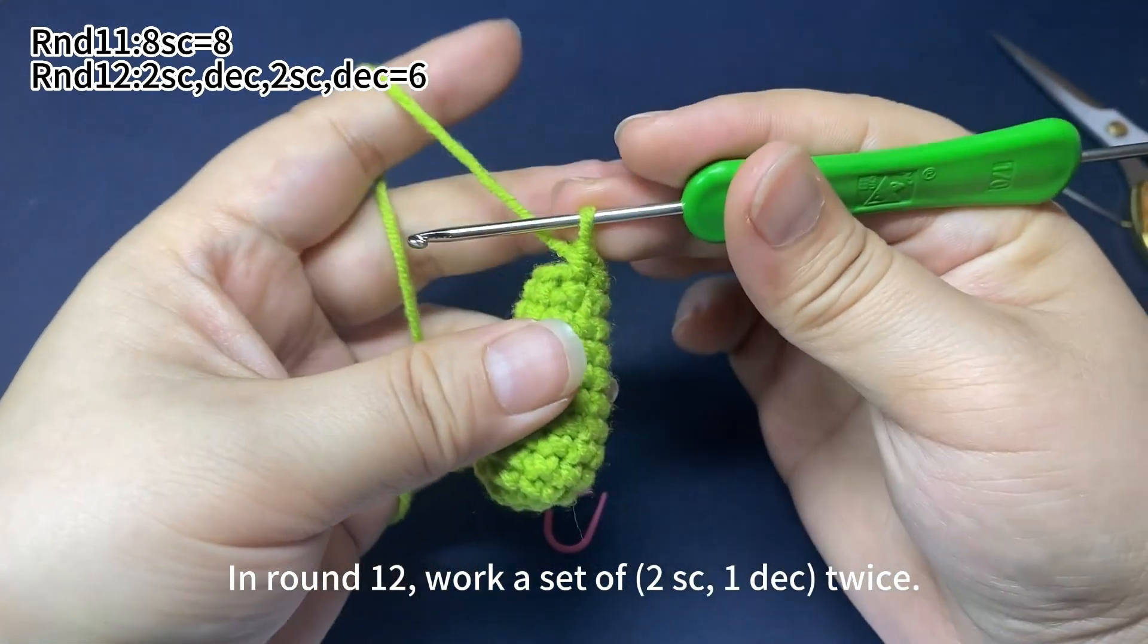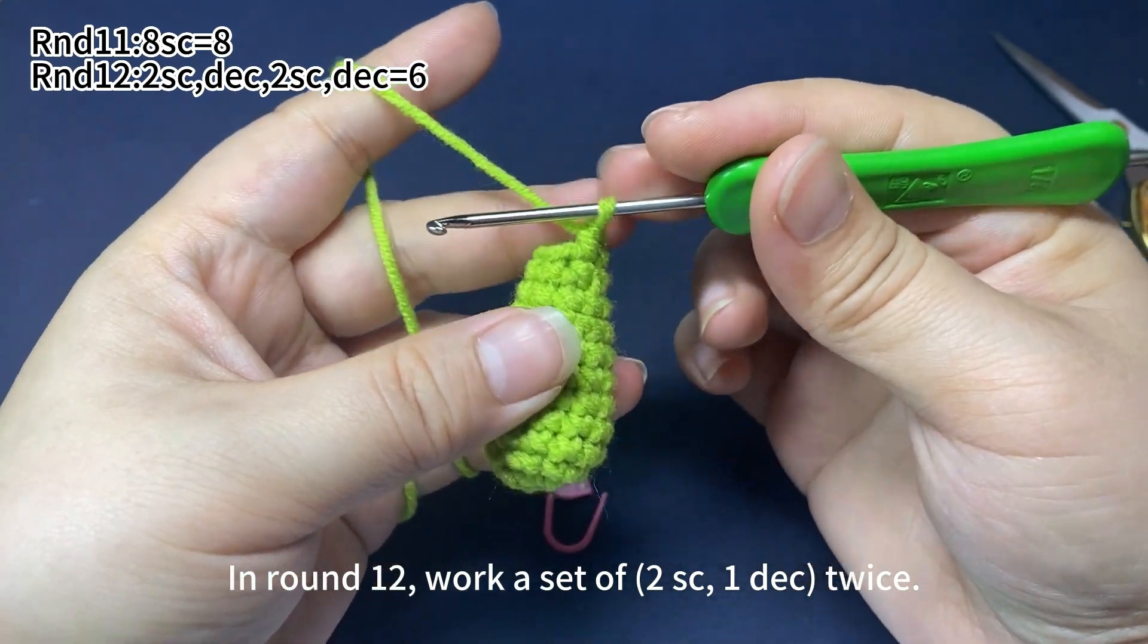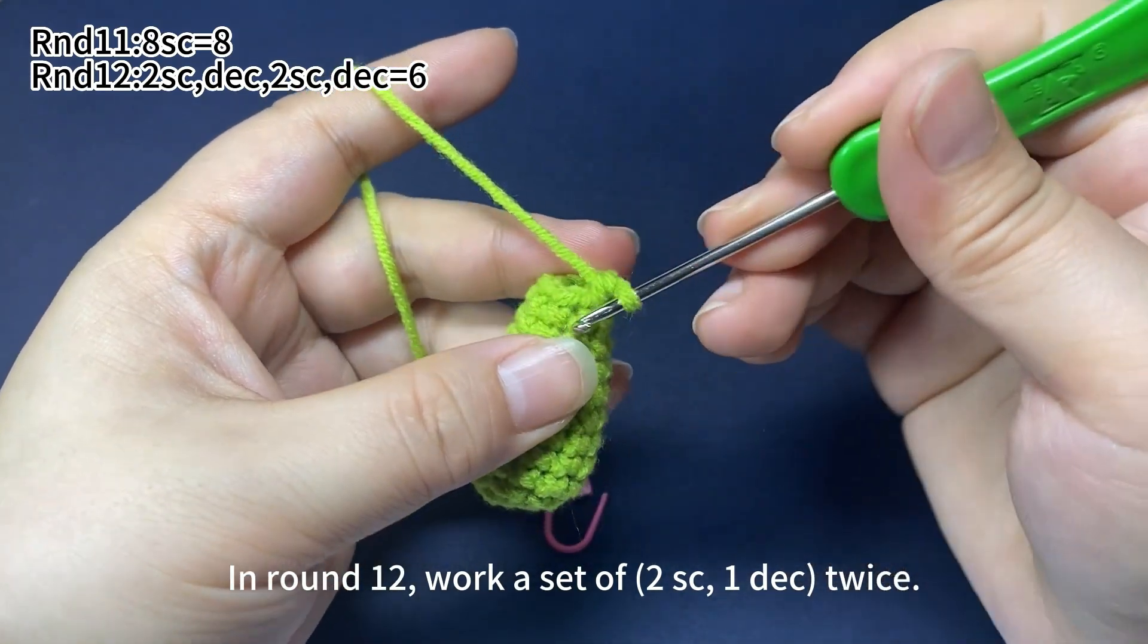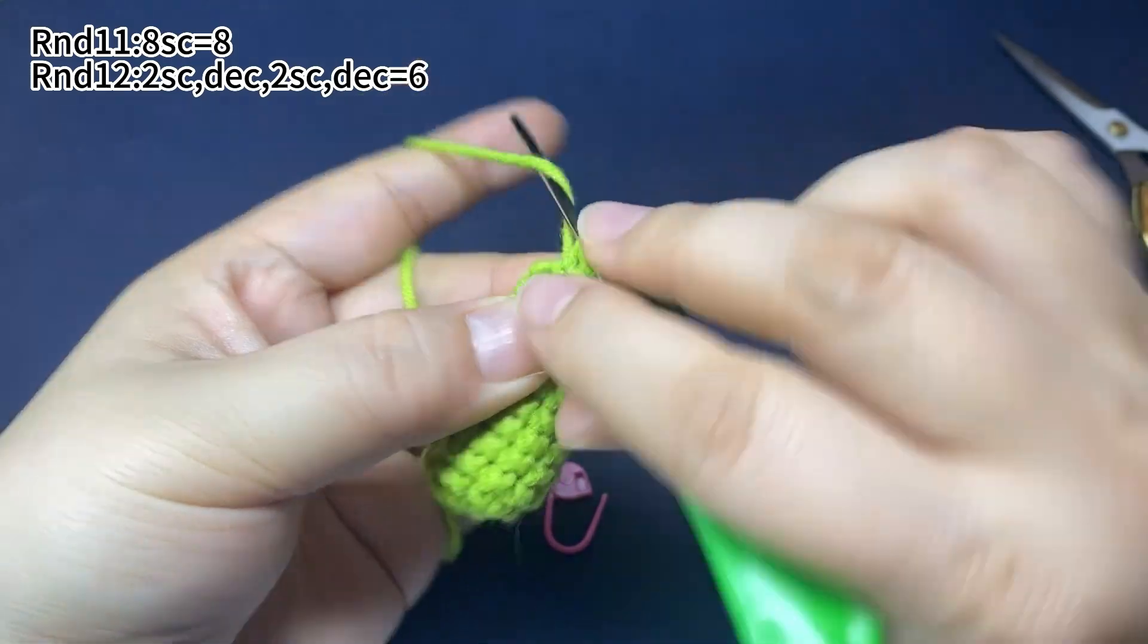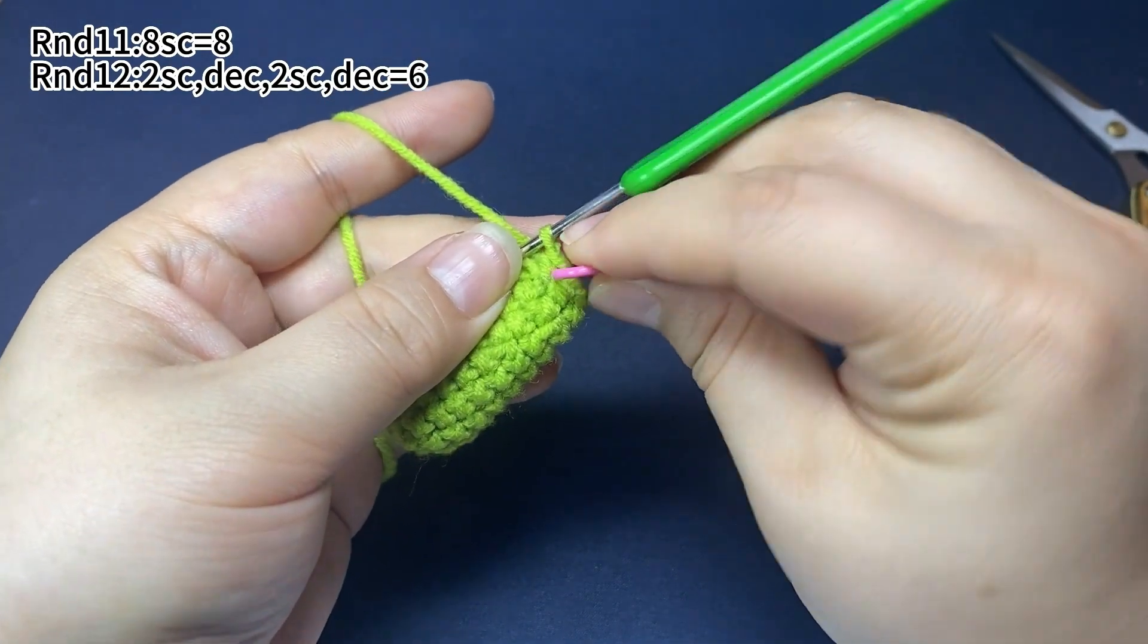In round 12, work a set of 2 single crochets, 1 decrease, twice. Place a marker in the first stitch.